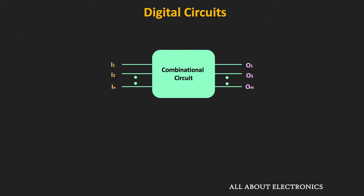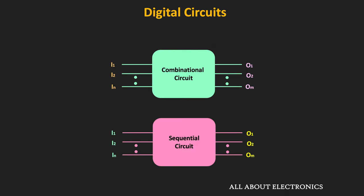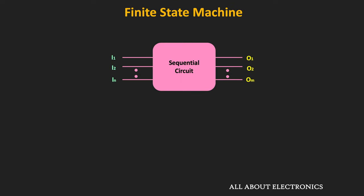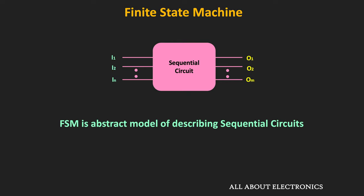In the conventional circuit, for a given set of inputs every time we get the same output. But in the sequential circuits for a given set of inputs we may not get the same output, because the output also depends on the present state of the memory elements. All the synchronous sequential circuits are known as the finite state machine, or in other words this finite state machine is an abstract model for describing the sequential circuits. All the synchronous sequential circuits like the synchronous counters or the registers are examples of the FSM.